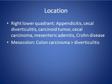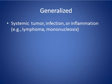Mesocolon lymph nodes are more common in colon carcinoma rather than in diverticulitis. For generalized lymph nodes, you should look for a systemic tumor, infection, or inflammation, such as lymphoma or infectious mononucleosis.